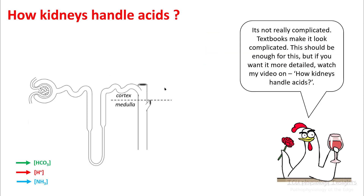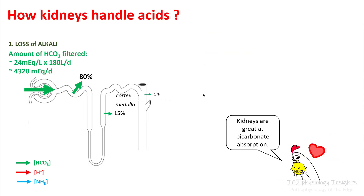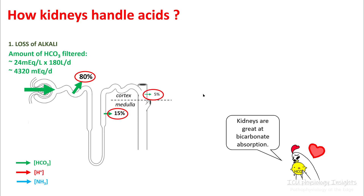So how do kidneys handle acids? Well, there are two parts to this. First is loss of alkali. Remember that sodium bicarbonate is easily filtered, so you'll be losing around 4000 milliequivalents of sodium bicarb every day. However, the kidneys are really great at reabsorbing all this back. Most of it happens in the proximal convoluted tubules and the rest in the ascending loop of Henle and distal convoluted tubule.